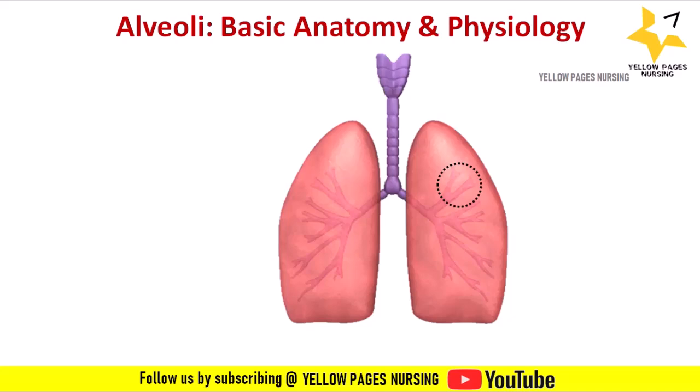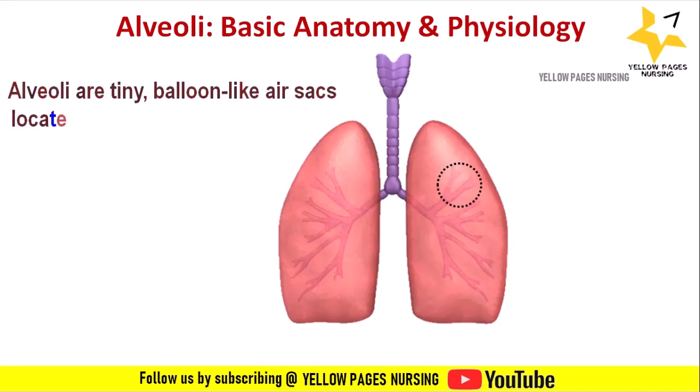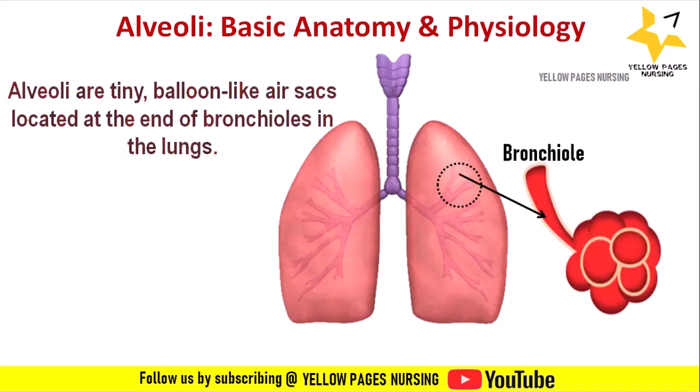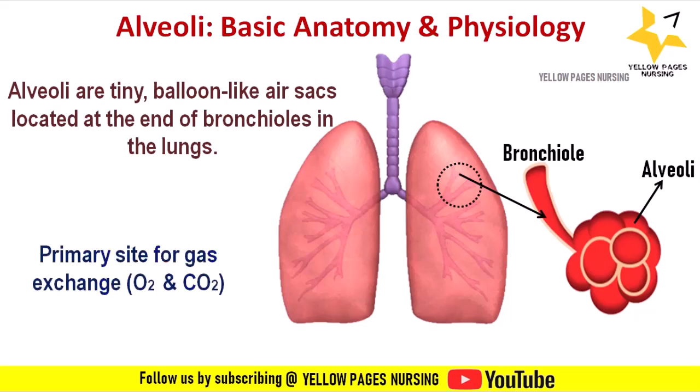Alveoli are tiny balloon-like air sacs located at the end of bronchioles in the lungs. The alveoli are surrounded by a network of capillaries — tiny blood vessels. Alveoli are the primary site for gas exchange, that is oxygen and carbon dioxide, between the lungs and the bloodstream.